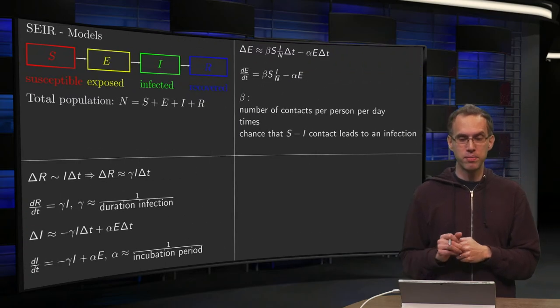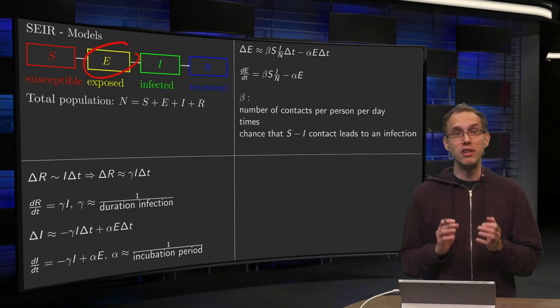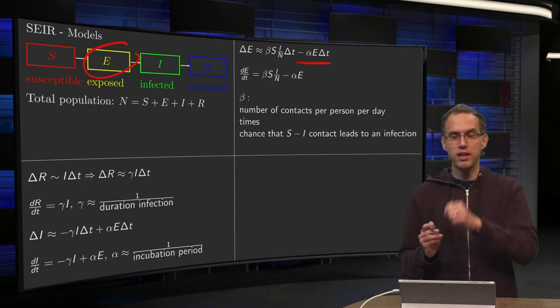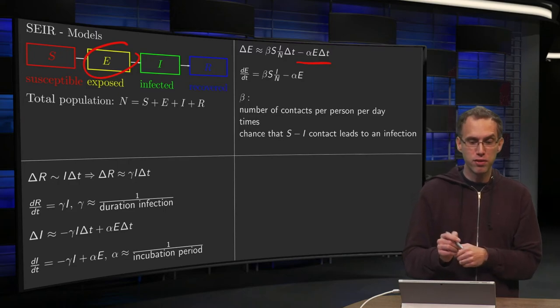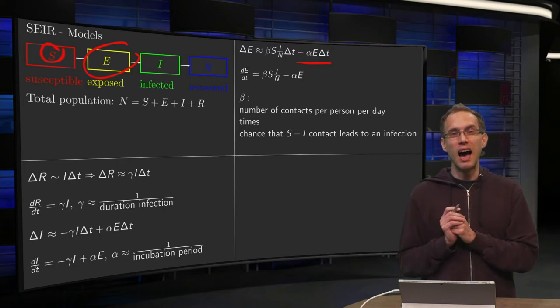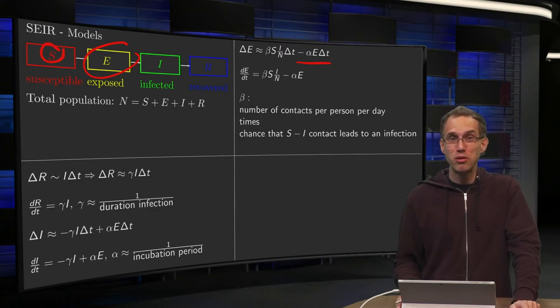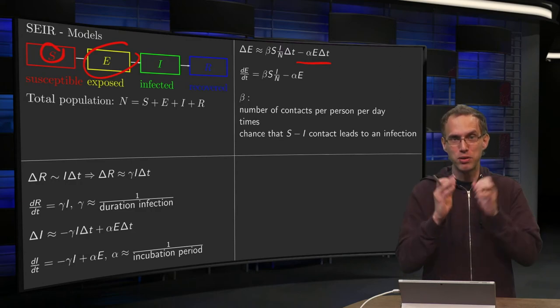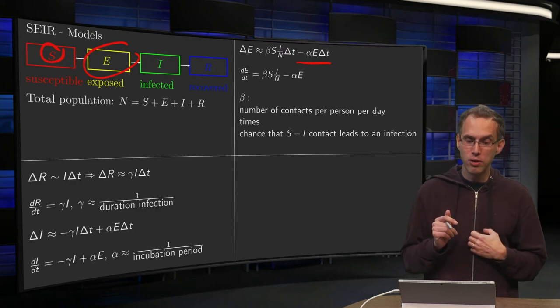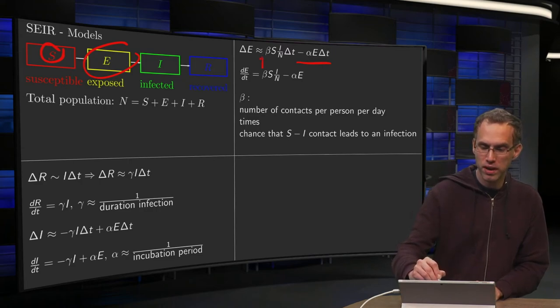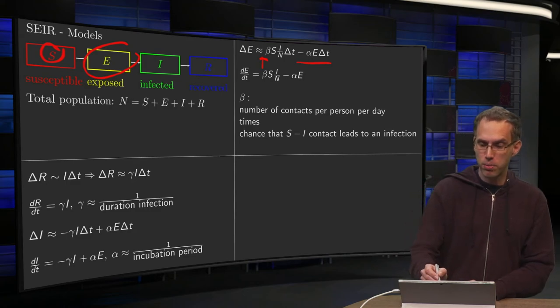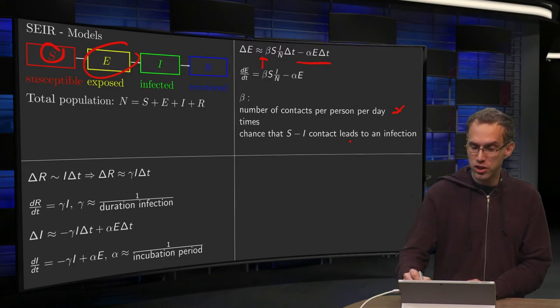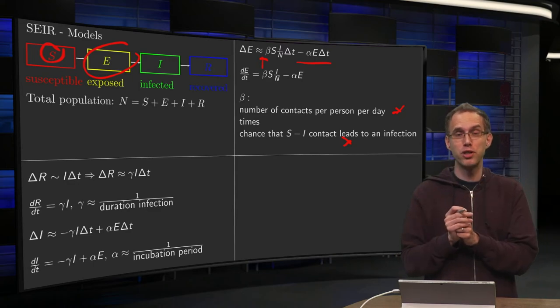Then the final part. How do we end up in E? So that's actually the most interesting part, also the hardest. Of course people leaving E are the people going to I, so minus alpha E times delta t. And you also get an influx from the group S. But how do you get from S to E? How are we going to model that? First of all in the case of COVID-19 this is not known. Fortunately we do not really need to know it exactly if you want to model this mathematically. So how do we do it? We introduce some parameter beta over here. And what's this parameter beta? It's the product of two terms: the number of contacts per person per day times the chance that if you have a contact from an S and an I person you get an infection.